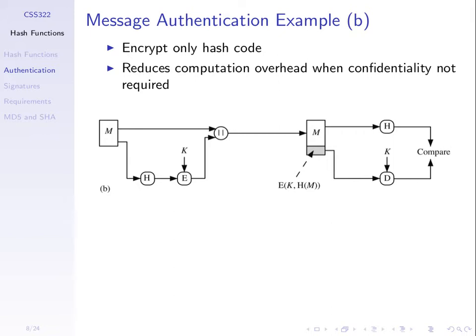Let's look at what an attacker can do on this scheme and see how it provides authentication. One suggested attack: modify the message. As an attacker, if you can intercept the message, modify it, and forward it on to B without B knowing it was modified, you've been successful. So let's try — the attacker's goal is to modify the message and go undetected.